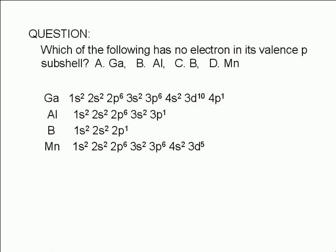The valence shell of gallium is the 4th shell. It has 2 electrons in its 4s subshell and 1 electron in the 4p subshell. For aluminum, the valence shell is the 3rd shell. It has 2 electrons in the 3s subshell and 1 electron in the 3p subshell.